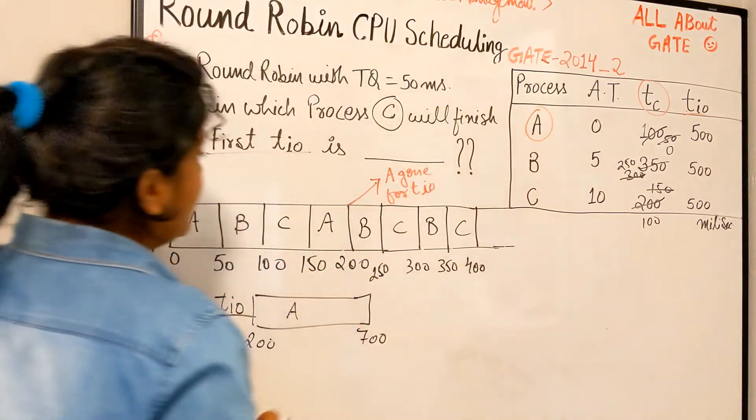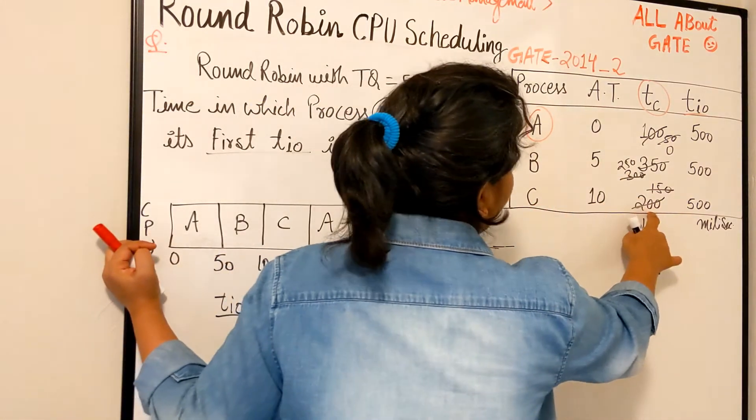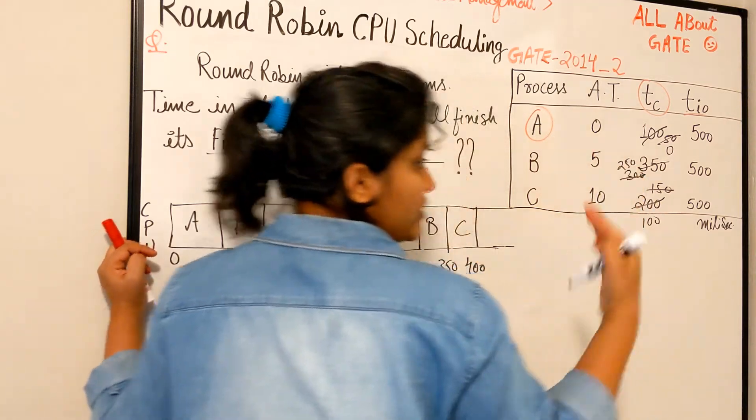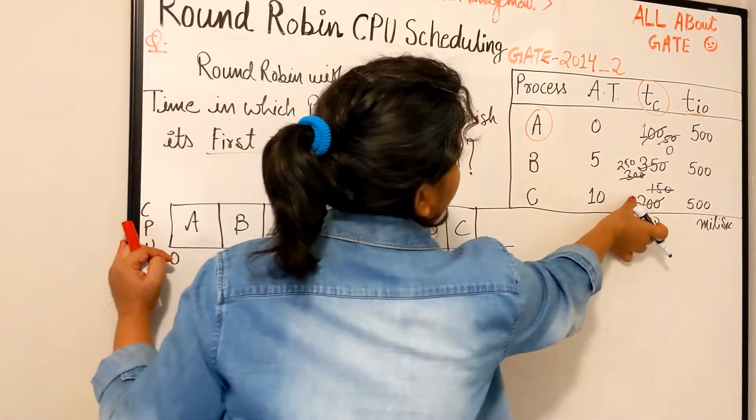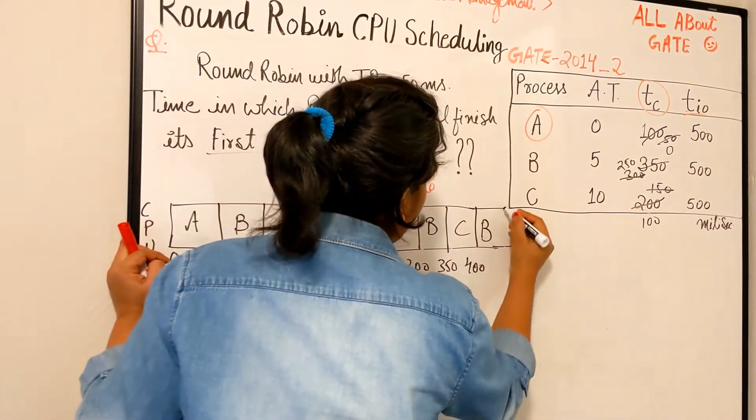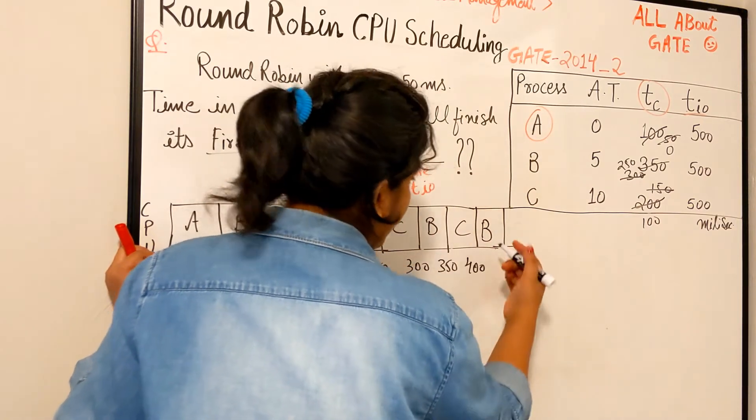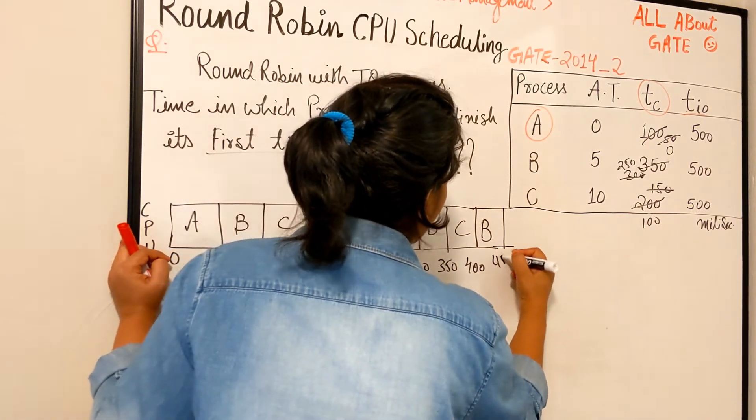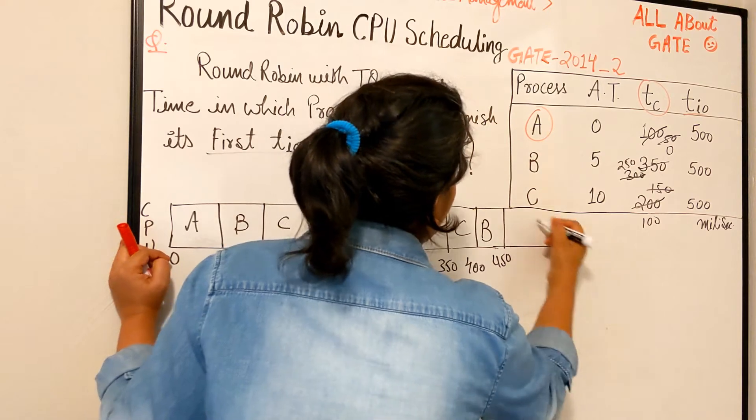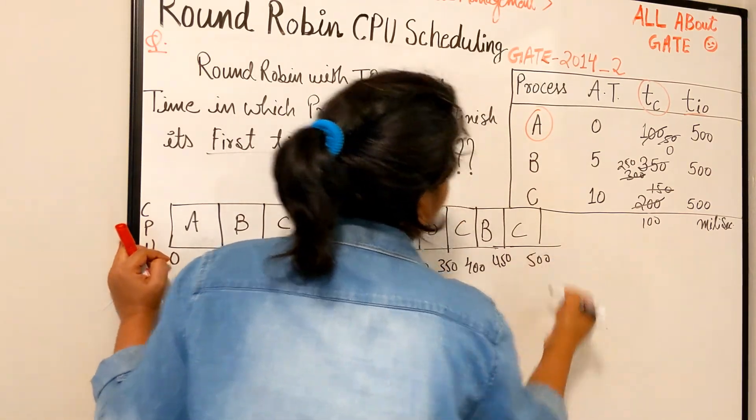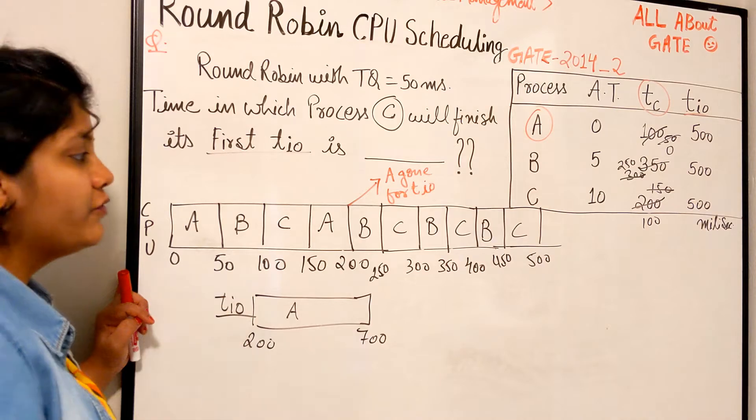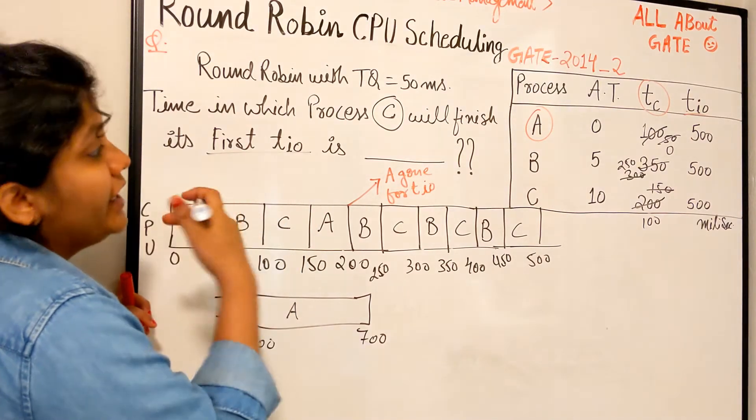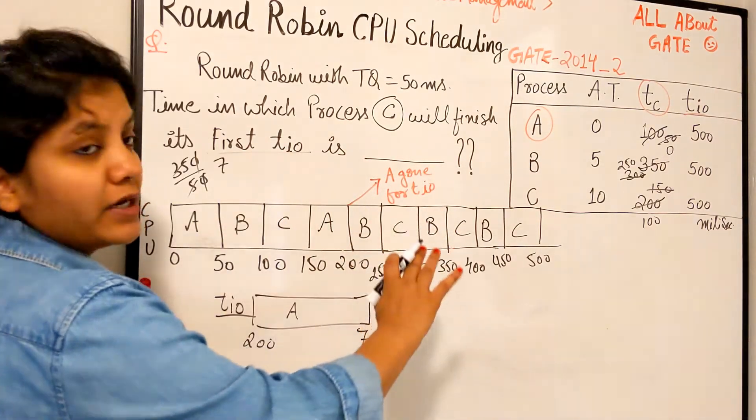We need four quantums of C, each time 50, 50, to finish its 200. By the time, let's put the B also now. It needs 450, it becomes 450. And the next one is C, and that is 500.